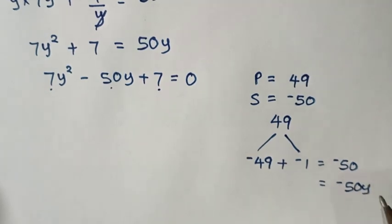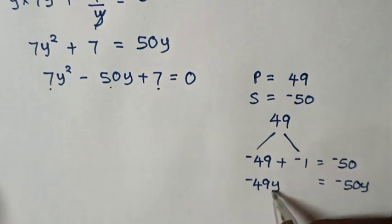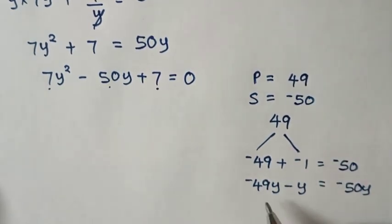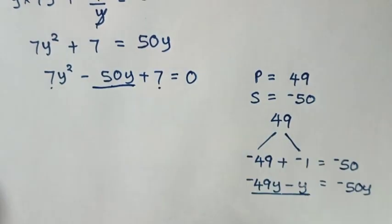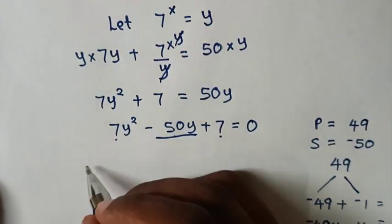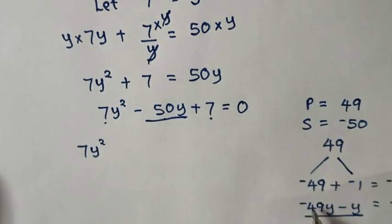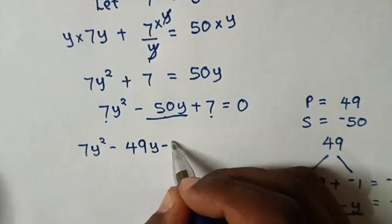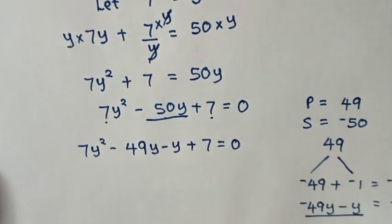So -50y is split into -49y and -y. Substituting into the equation gives: 7y² - 49y - y + 7 = 0.